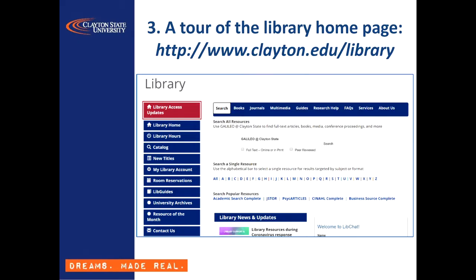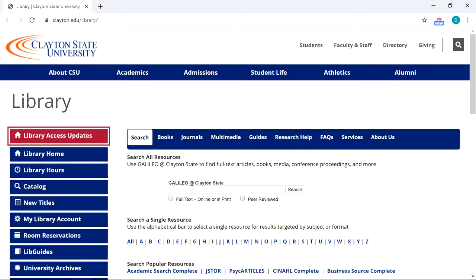The library homepage is your best starting point for pretty much any research project. The URL is www.clayton.edu/library. Even though it's pretty easy to remember, I strongly recommend bookmarking it — you're going to find yourself wanting to come back to it often. Right now I'm going to take you on a live tour and show you some of its more useful features, as well as conduct a couple of sample searches to show you how the library catalog and the databases work.